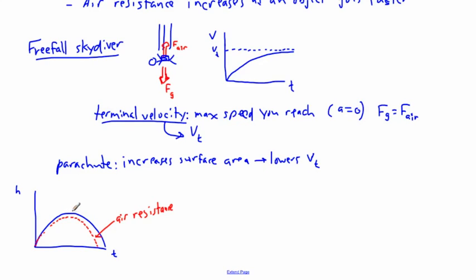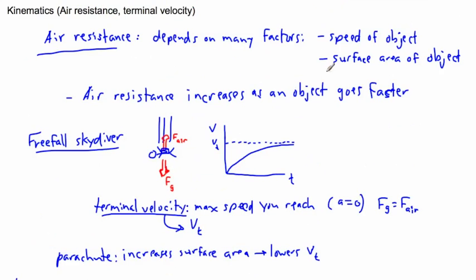Air resistance has very big effects in our everyday lives. When driving a car, you want to reduce surface area — that's why fast cars are very low and small relative to the air hitting them. It's more complicated than that, involving aerodynamics and airflow around the object, but the main idea is that air resistance slows things down and depends on speed and surface area. That's why a parachute's large surface area decreases your terminal velocity.